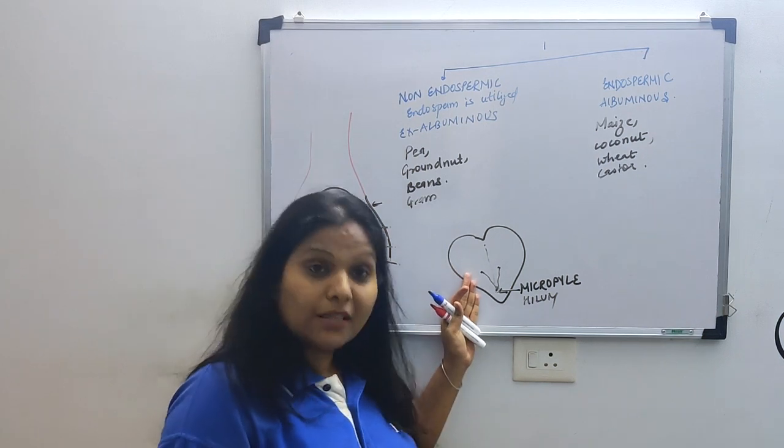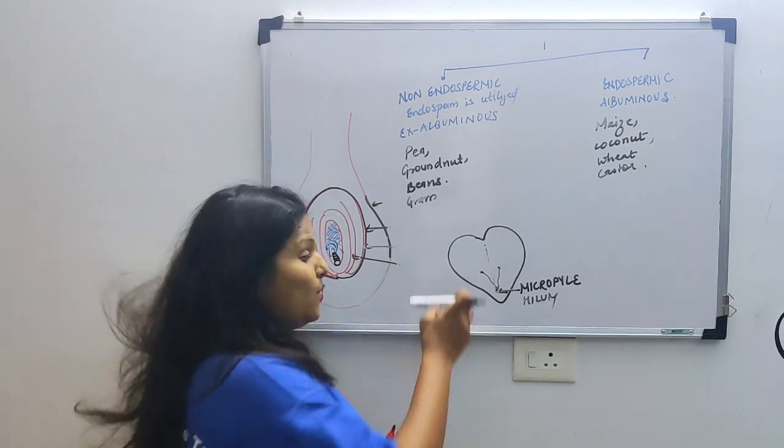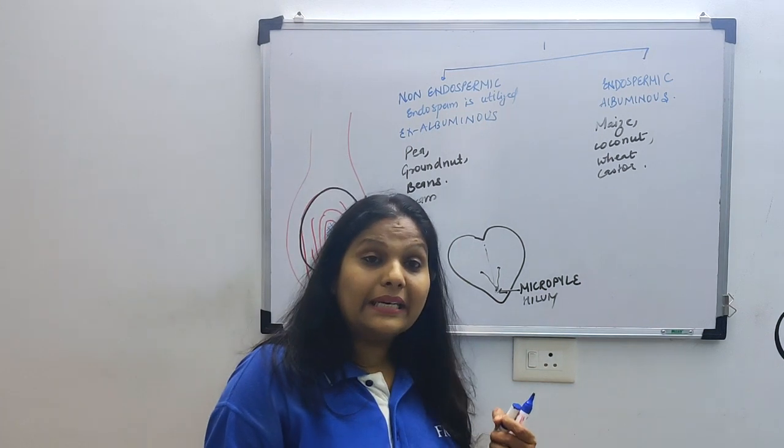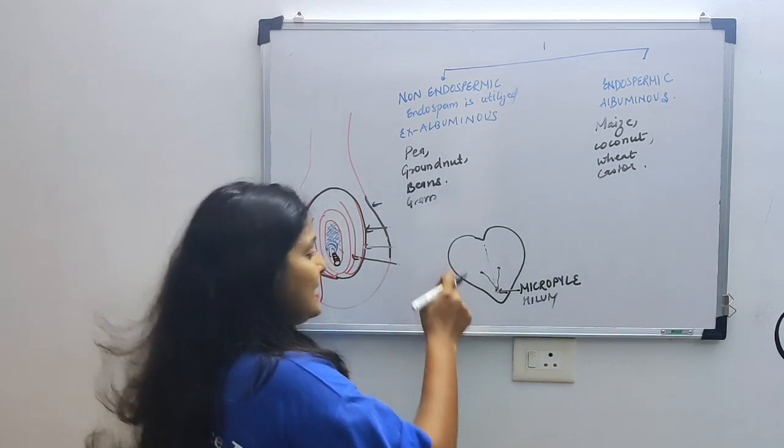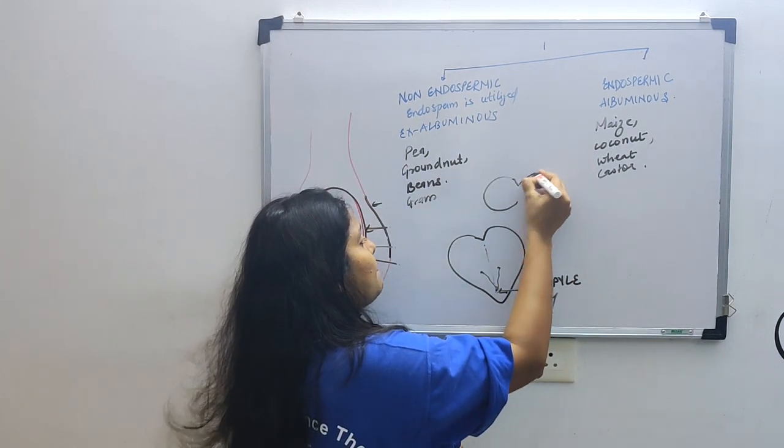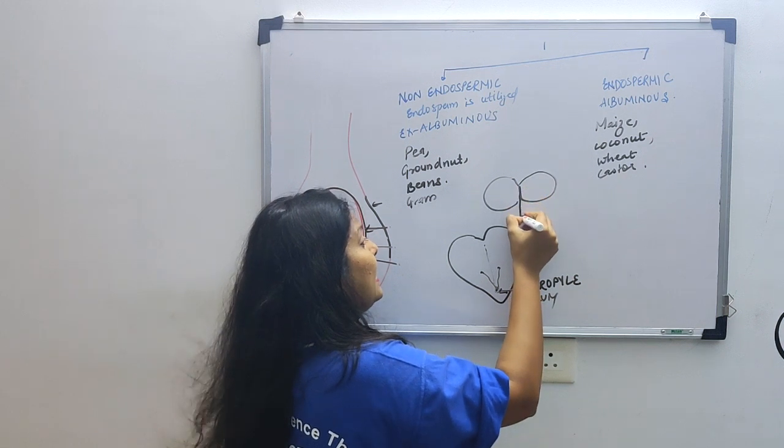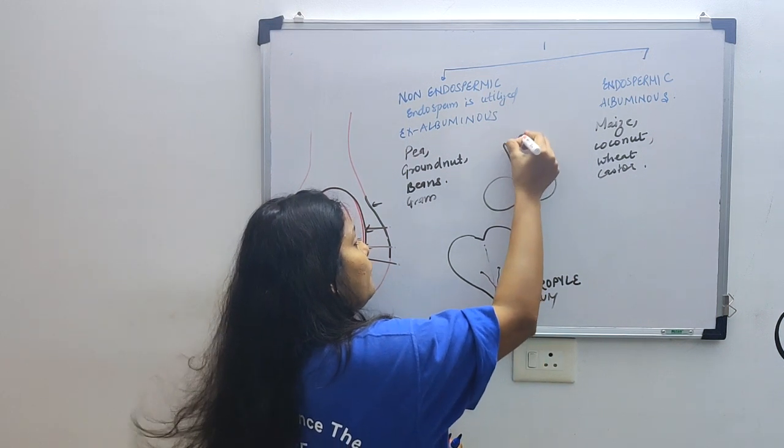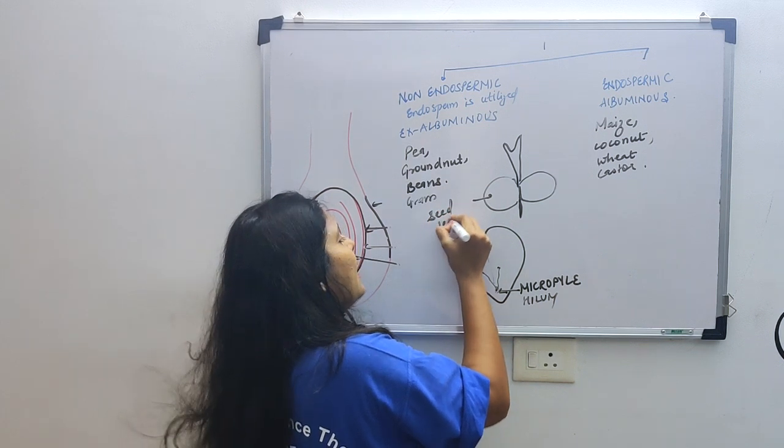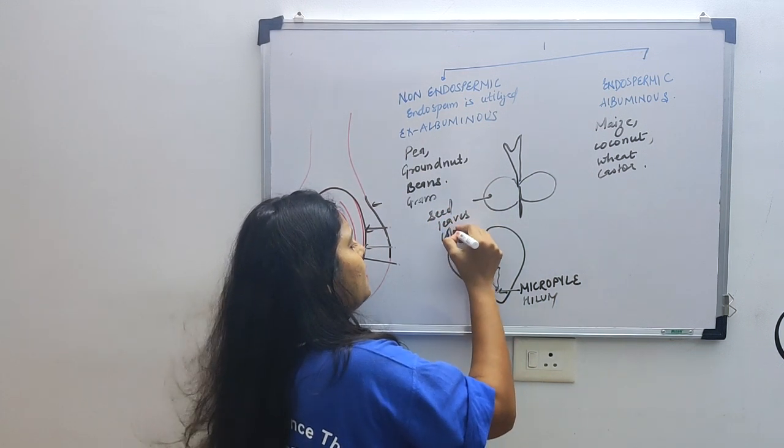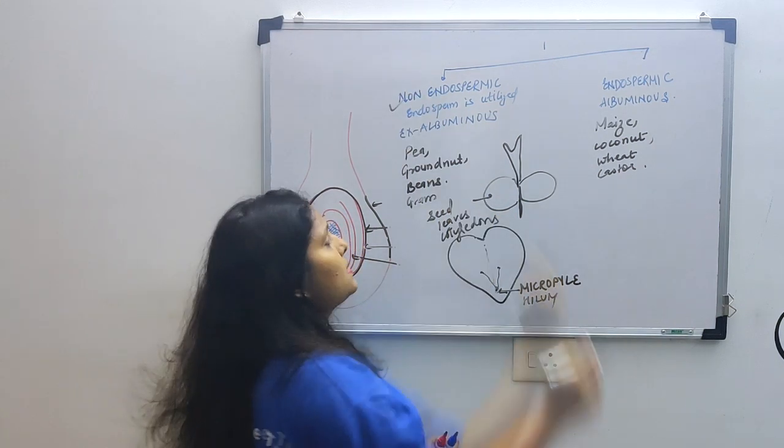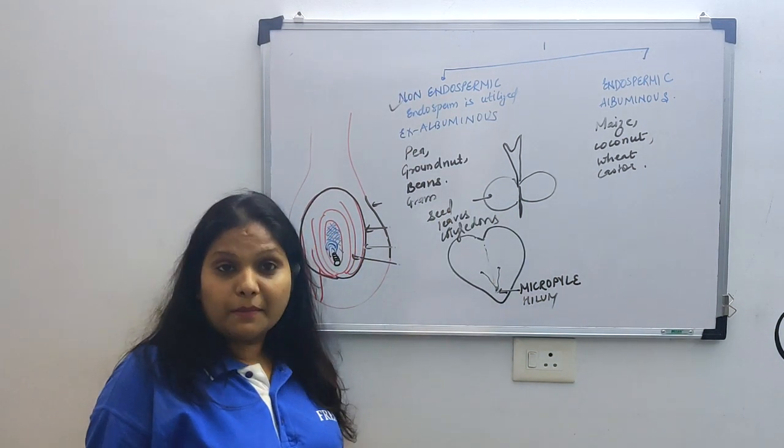Since their endosperm has finished, when they germinate, who will provide nourishment? Cotyledon. You will see in chana, in peas, generally the cotyledons are what make the first seed leaf. So the first leaves of the seed - the seed leaves - are nothing but cotyledons, produced from cotyledons in most of the plants, like dicot non-endospermic seeds.